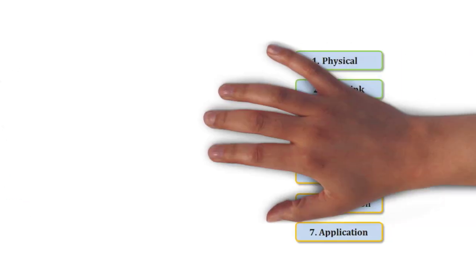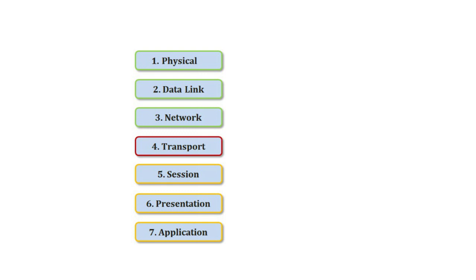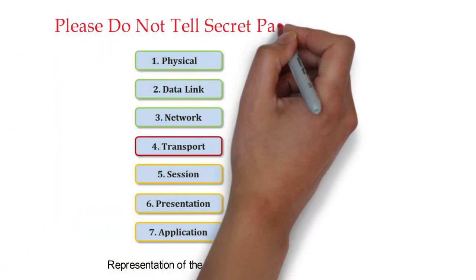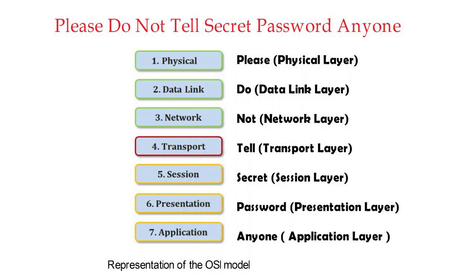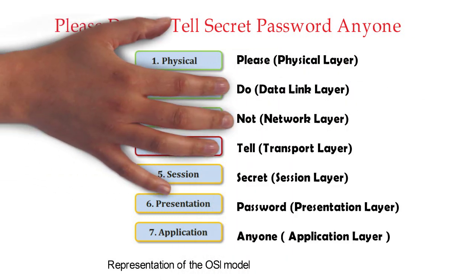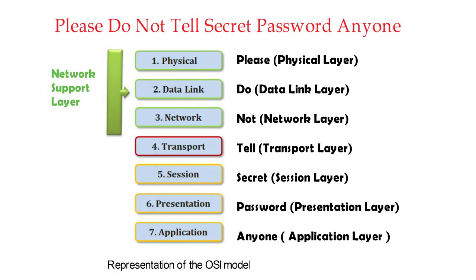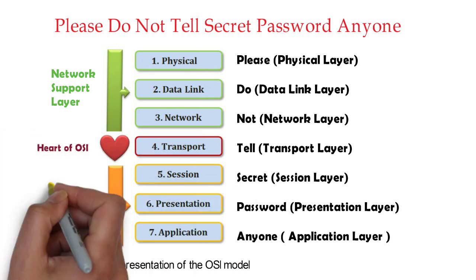Now, representation of the OSI reference model. To remember the OSI model, you must first remember the name of the seven layers in proper order. One common method of memorizing them is: 'Please Do Not Tell Secret Password Anyone.' Layers 1, 2, and 3 are called network support layers, layer 4 is called the heart of the OSI, and layers 5, 6, and 7 are called user support layers.